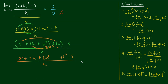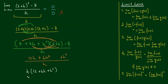Now the 8 and the minus 8 cancel out. We've simplified down, so I can factor out an h on the top. We have h times (12 plus 6h plus h squared), divided by h. The h on the top divided by h on the bottom cancels out.